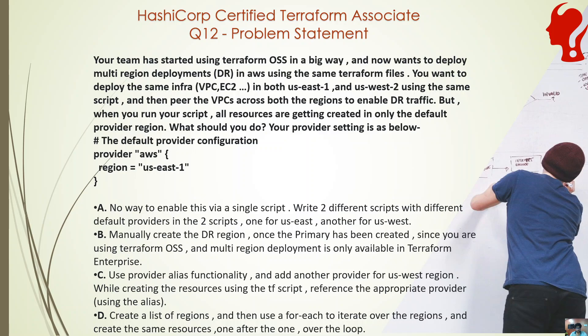Option A says there's no way to do this via a single script, so you need two different scripts with different default providers — one for US-East and another for US-West. While you could have two scripts, this is not the only way. The issue is VPC peering: if you have two completely separate configuration folders, which provider do you use for the peering between US-East-1 and US-West-2? The basic infrastructure could be created separately, but peering cannot be solved that way.